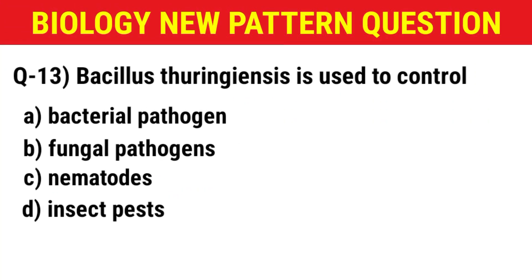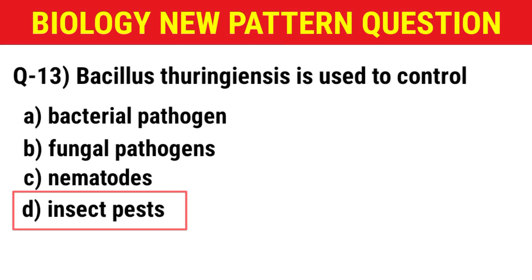Next question: Bacillus thuringiensis is used to control — (A) bacterial pathogens, (B) fungal pathogens, (C) nematodes, (D) insect pests. The correct answer is option D: insect pests.